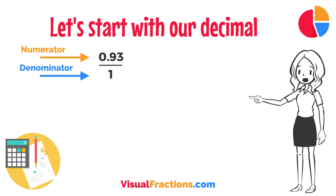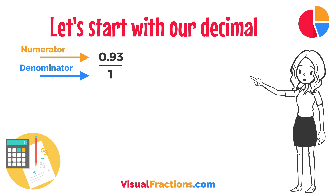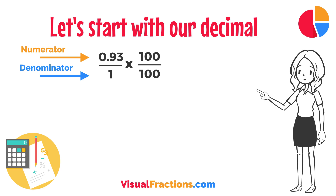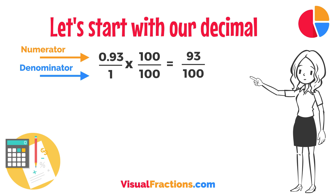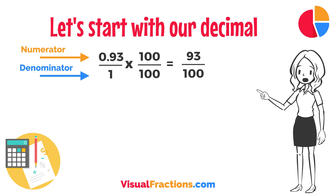This sets up the conversion process where we multiply both the numerator, the decimal, and the denominator, 1, by 100 because there are two decimal places. So 0.93 times 100 gives us 93, and 1 times 100 gives us 100. This translates 0.93 to the fraction 93 over 100.